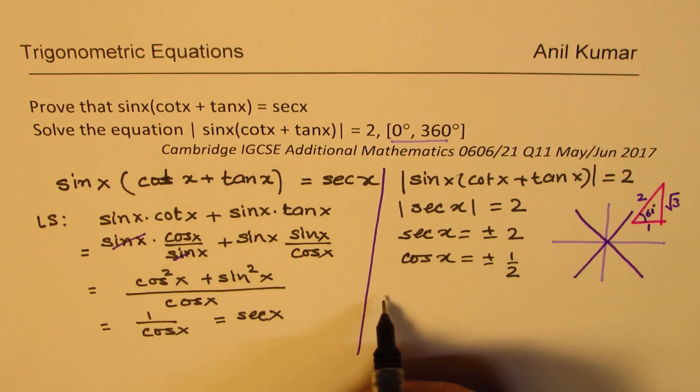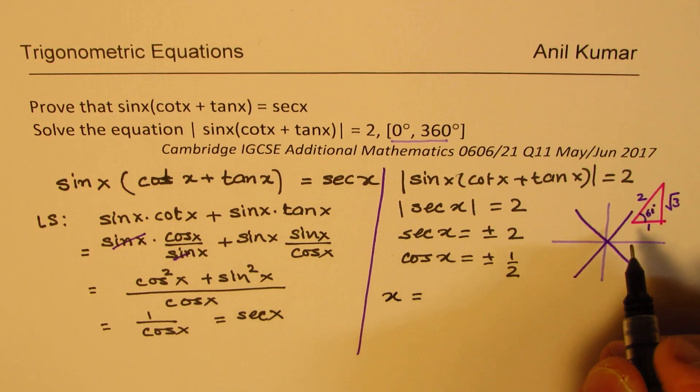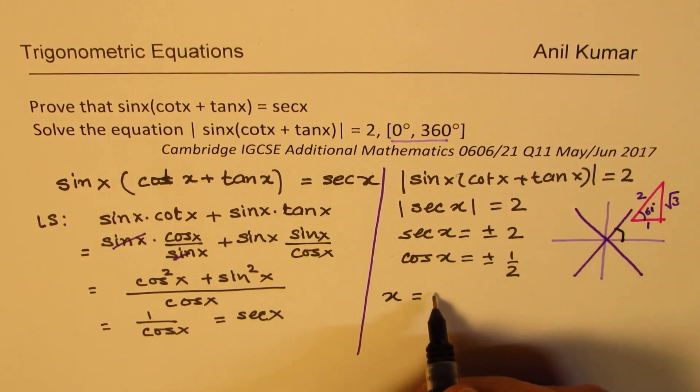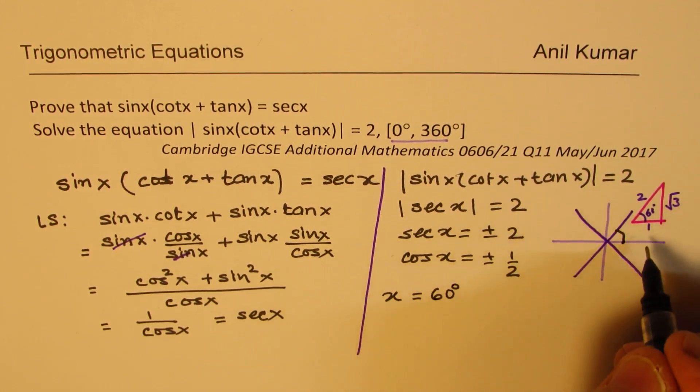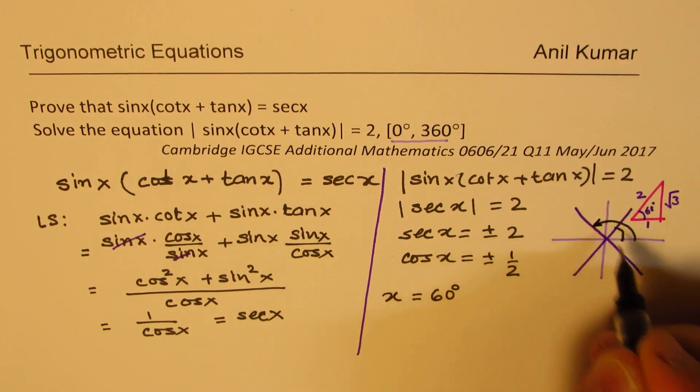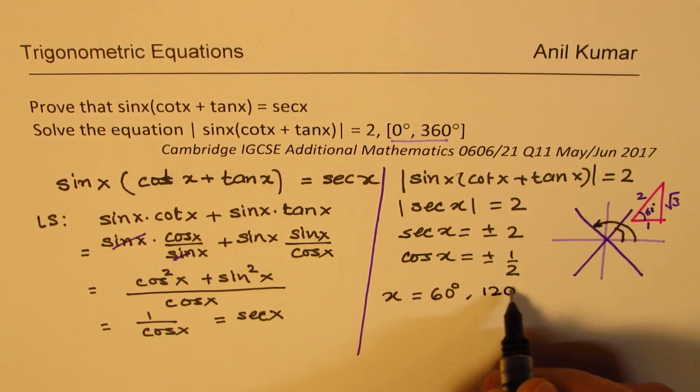So we can write down the value of x as equal to acute angle 60 degrees, right? And then this 180 minus 60, which is 120 degrees.